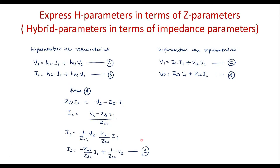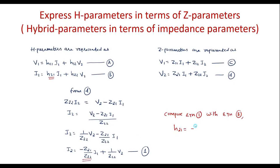Now I will compare equation 1 with equation B. Equation 1 is of the same form: I2 = some constant × I1 + constant × V2. Therefore, comparing, the coefficient of I1 is H21, so H21 = −z21/z22. Similarly, the coefficient of V2 is H22, so H22 = 1/z22.